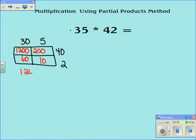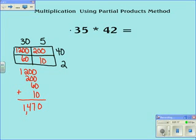I'm now going to add these numbers together. 1,200 plus 200 plus 60 plus 10. Notice how important it is to keep my numbers in columns. Then I'm going to add each column. My answer is 1,470.